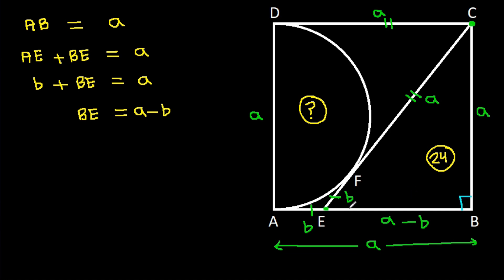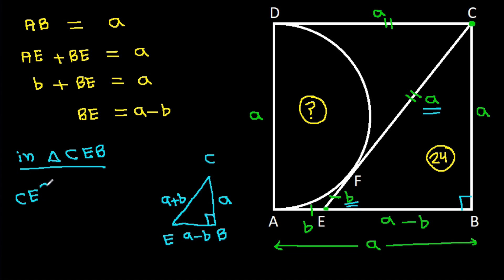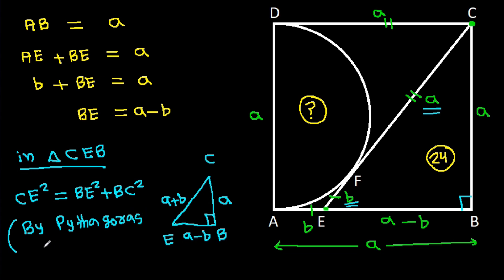Since ABCD is a square, this angle is 90 degrees. In triangle CEB, BE = A - B, BC = A, and CE = A + B. This angle is 90 degrees, so by the Pythagorean theorem, CE² = BE² + BC².